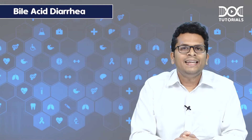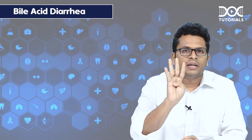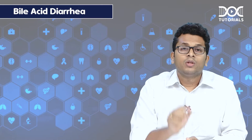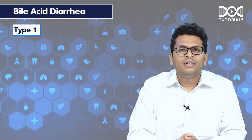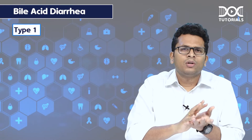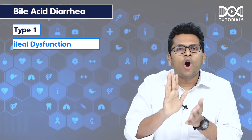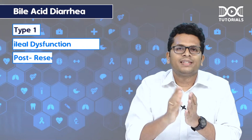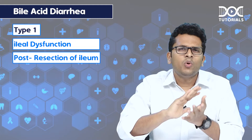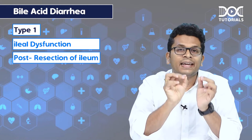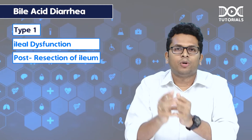They are broadly classified as four types. The first type, type 1, is basically because of ileal dysfunction or post resection of ileum. This is more like a secondary bile acid malabsorption.